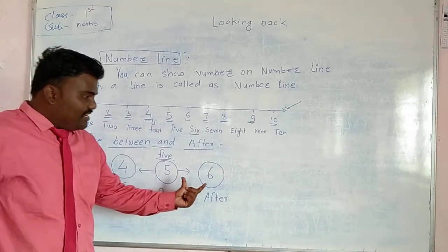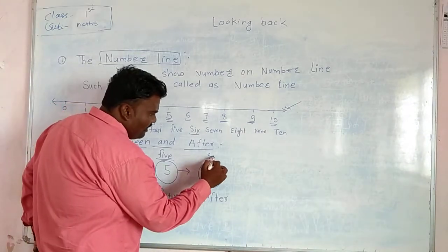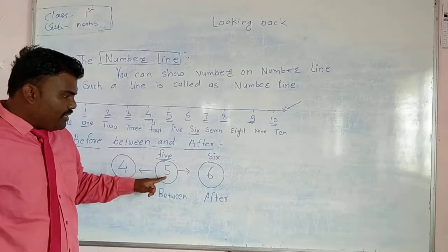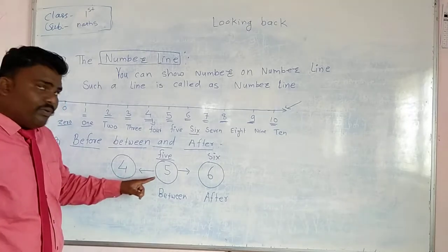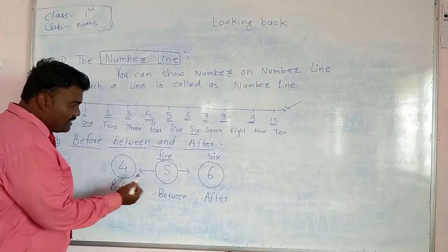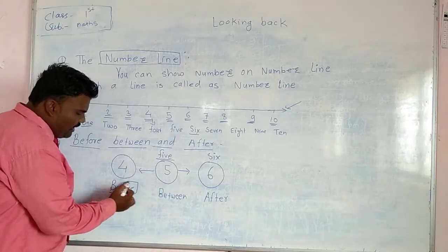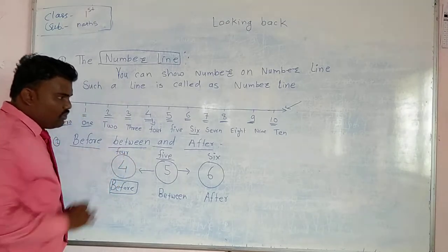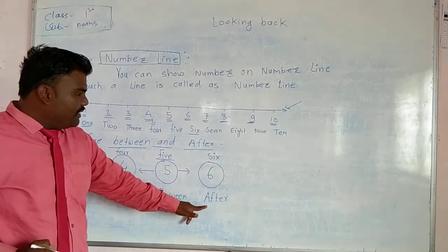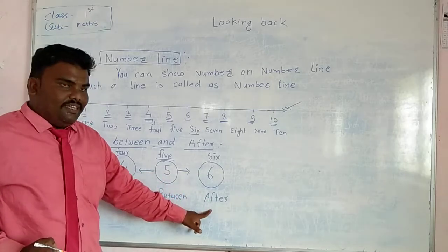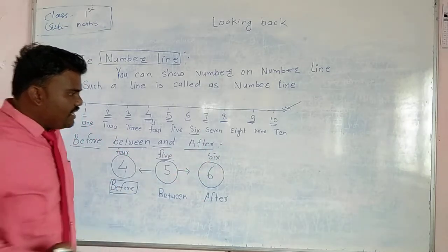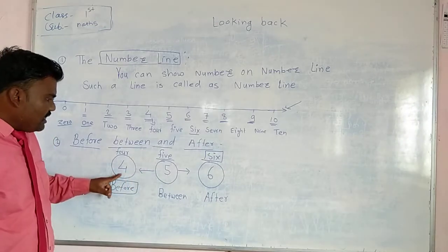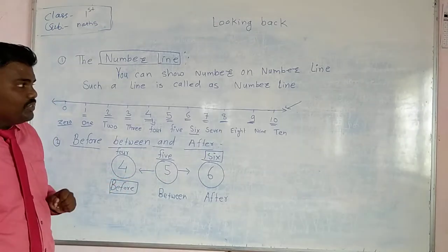And after 5 what do we write? Yes, 6. We write 6. So 6 is after 5, 6 is after 5, and 4 is before 5. Before 5 means what comes before 5? 4 comes. Its spelling is F-O-U-R, 4. And this is after. After 5 what comes? S-I-X, 6. 6 is after 5 and 4 is before 5. So this is how we have to know the numbers and all things.